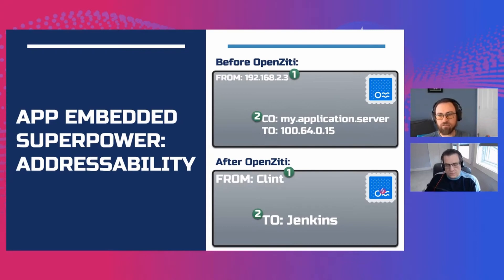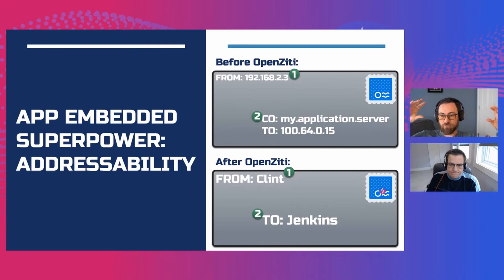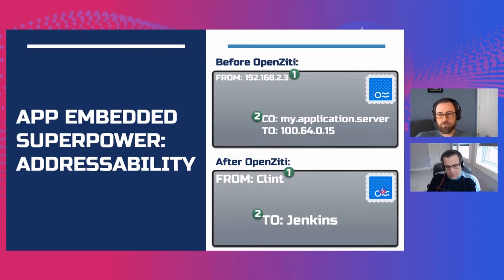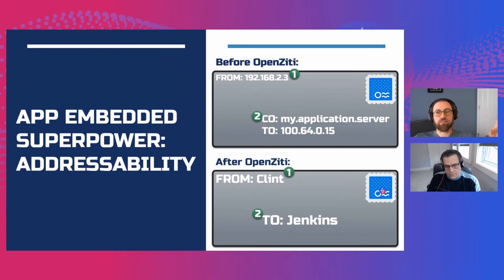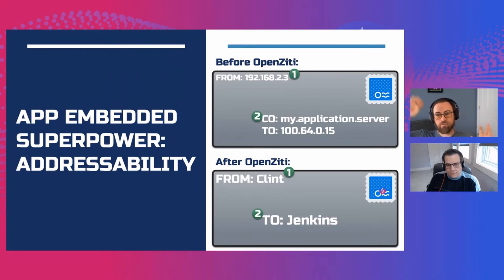When your ability to talk to something is based on your IP address or the zone that you're in, there's at least a loose coupling to your physical circuit and your location. OpenZD is a logical abstraction that is software-defined and it flattens the network. The only thing that keeps you from talking to something is whether your identity has permission — a strong identity, not some weak trust factor like being in the building, on the VPN, or having an IP address with a firewall exception. It creates a much more flexible, logically defined flat network where everything can be a potential peer.